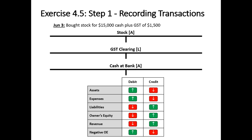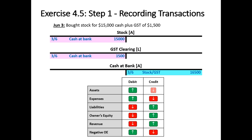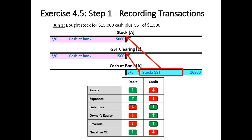June 3rd: bought stock for $15,000 cash plus GST of $1,500. Assets are increasing so that'll be a debit in the stock account. We're paying GST so that reduces our GST liability. Lastly, we've paid money so an asset is going to decrease on the credit side. Getting our referencing right: the debits will reference cash at bank, and the cash at bank credit side will reference stock and GST.